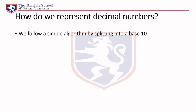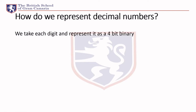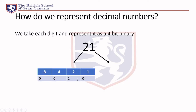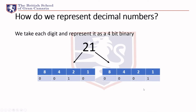We follow a simple algorithm: take a decimal number such as 21 and split it. We take each digit and represent it as a four-bit binary number. So we're not treating this as 21 — it's a one and a two separately. So this is two in binary, and this is one in binary.